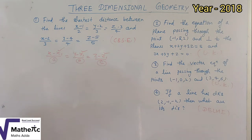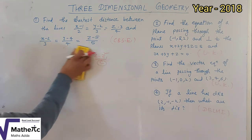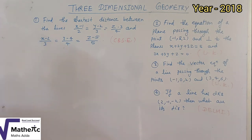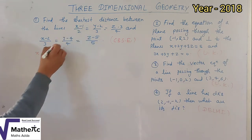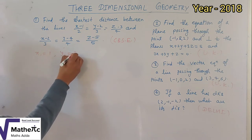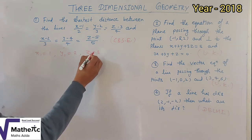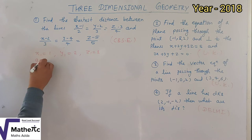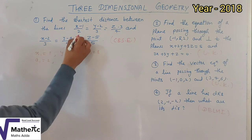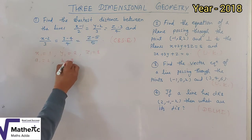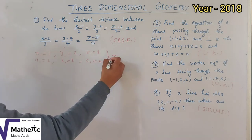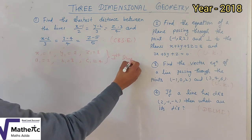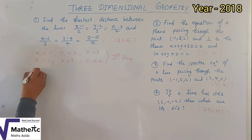If we look at the question, you can see: for line 1, x1 = 1, y1 = 2, z1 = 3, and direction ratios a1 = 2, b1 = 3, c1 = 4. For the second line, x2 = 2, y2 = 4, z2 = 5, a2 = 3, b2 = 4, c2 = 5.